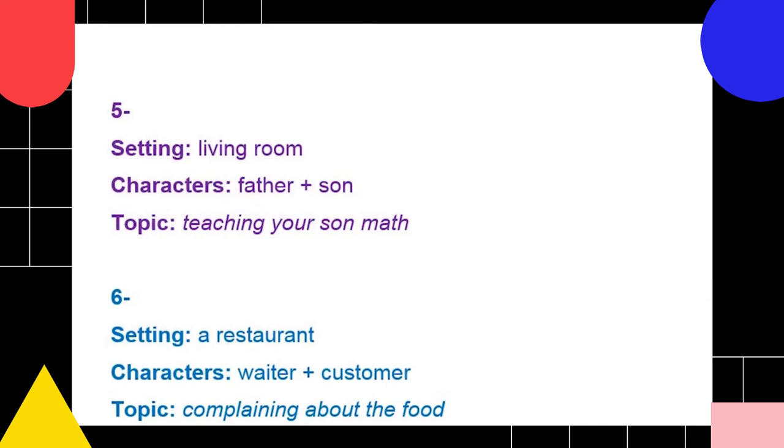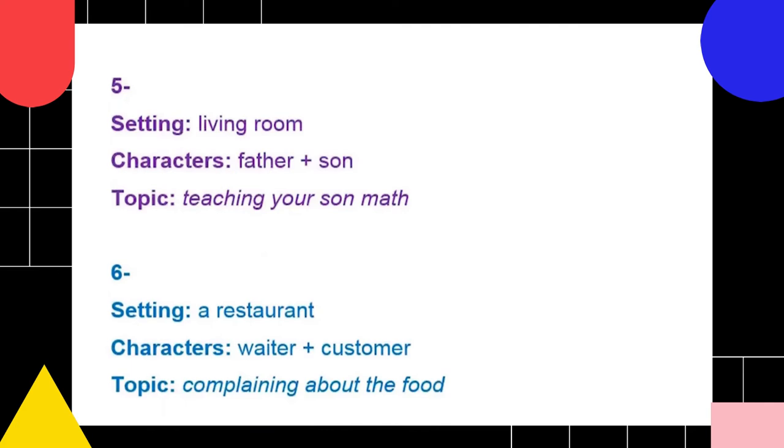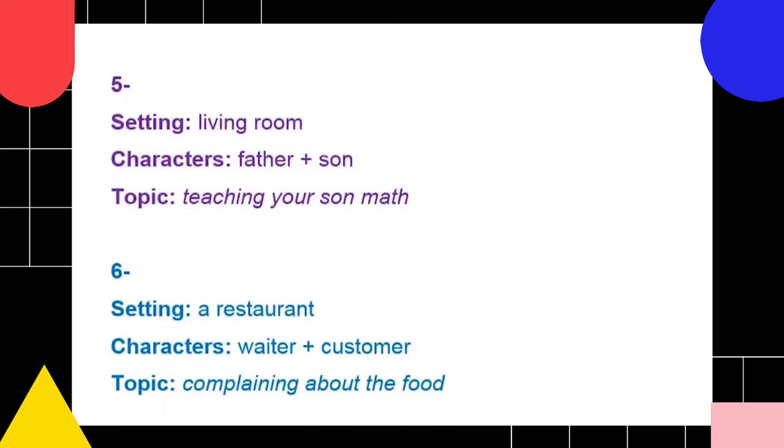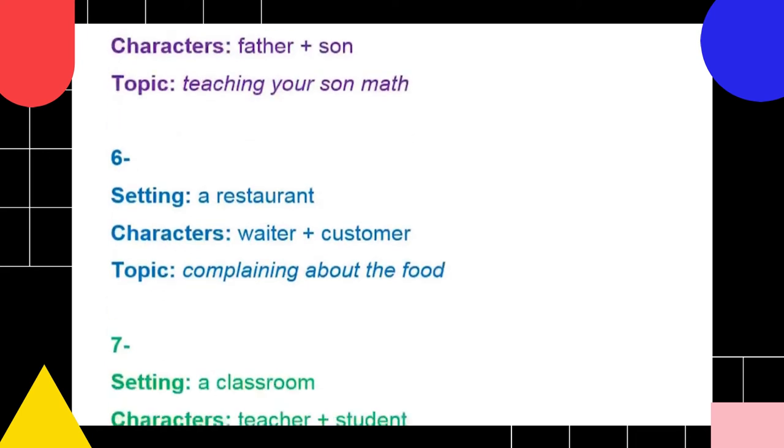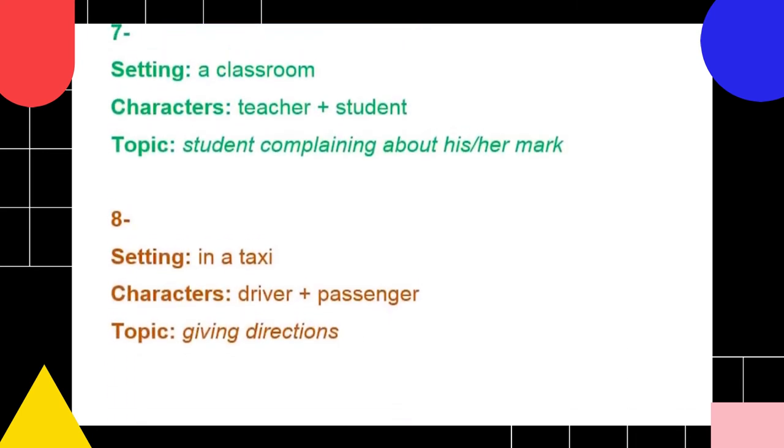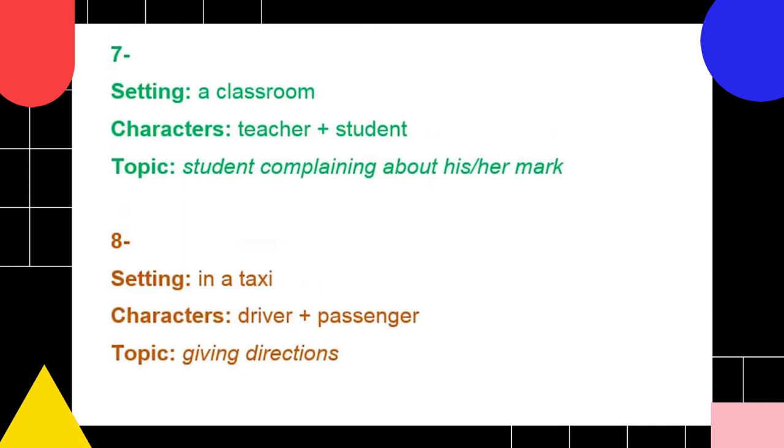The sixth one is cheesy: a waiter and a customer, and the customer complaining about the food. The seventh one is also a favorite because you get the students to be in your shoes.